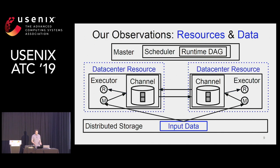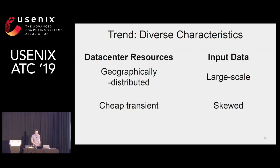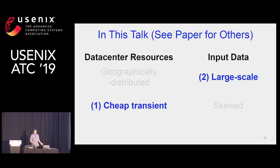In this setup, our observations are on resources and data. The current trend is that these resources and data are becoming diversified. Examples are geographically distributed resources, cheap transient resources, and also data that are becoming large and skewed. In this talk, I'll focus on cheap transient resources and large-scale data.